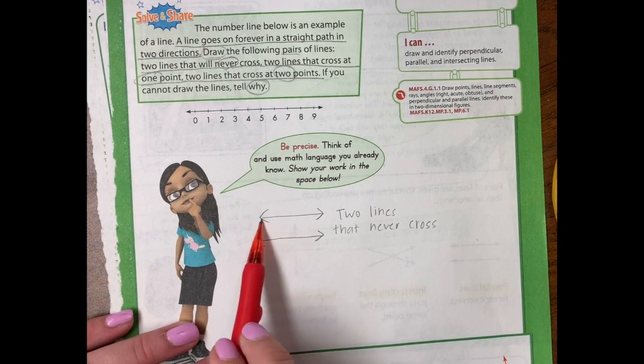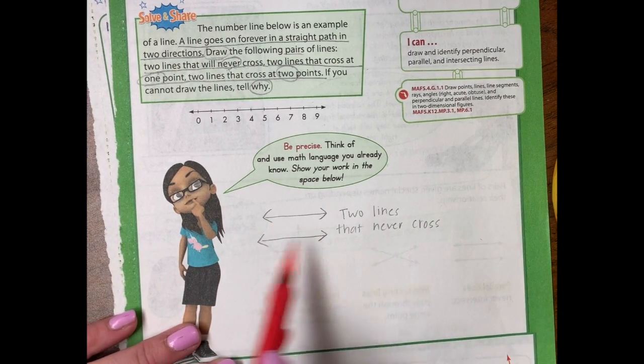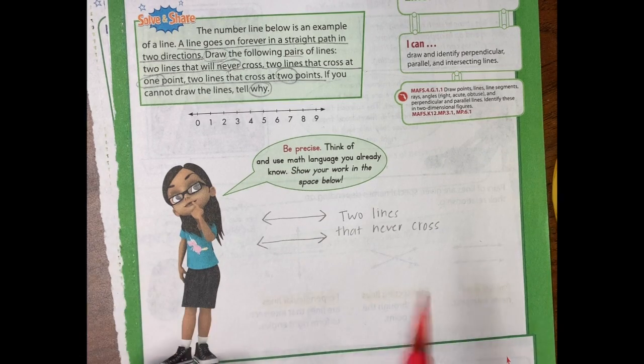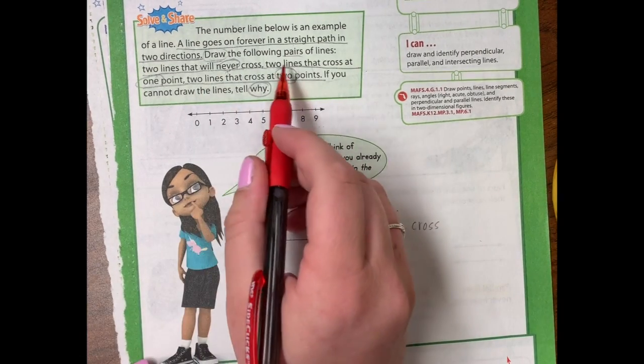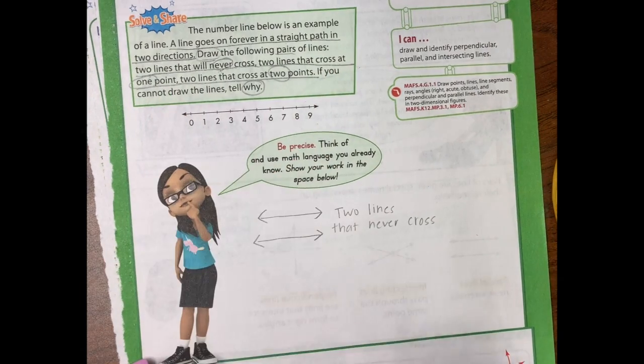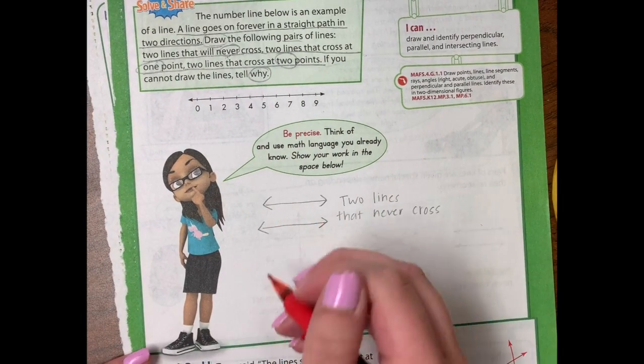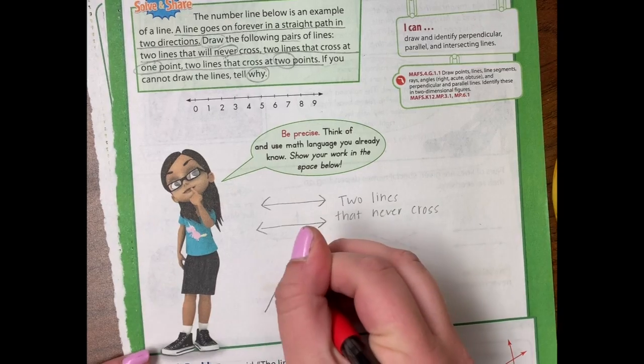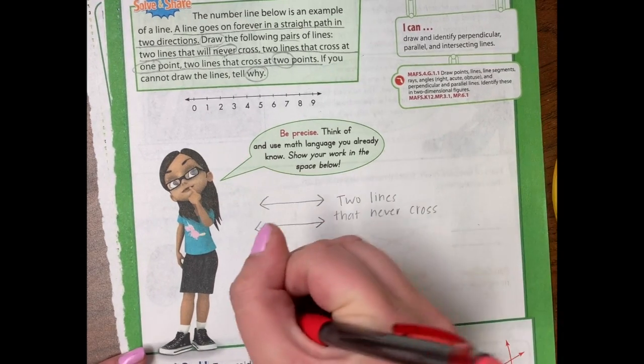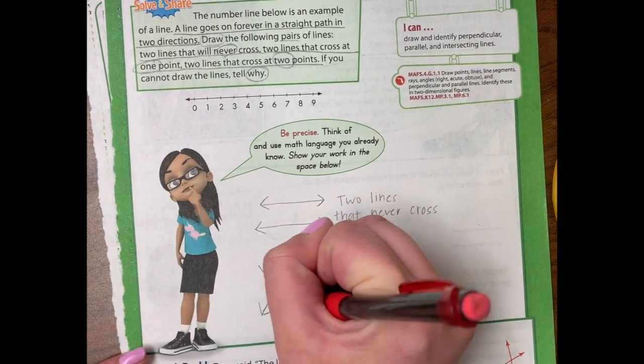Because no matter what, if this extended both ways forever and ever and this one did too, they're never going to touch. So got that one. Two lines that cross at one point. I'm just going to draw another line going this way, and then another line that just simply goes through it like an X.